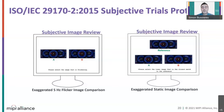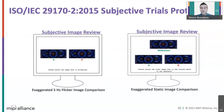The second type of test is similar but it's called a static image comparison. Instead of having the reference image and compressed image alternating, both are displayed at position A or B randomly, and the expert needs to tell which one, by comparison with the reference, is different.